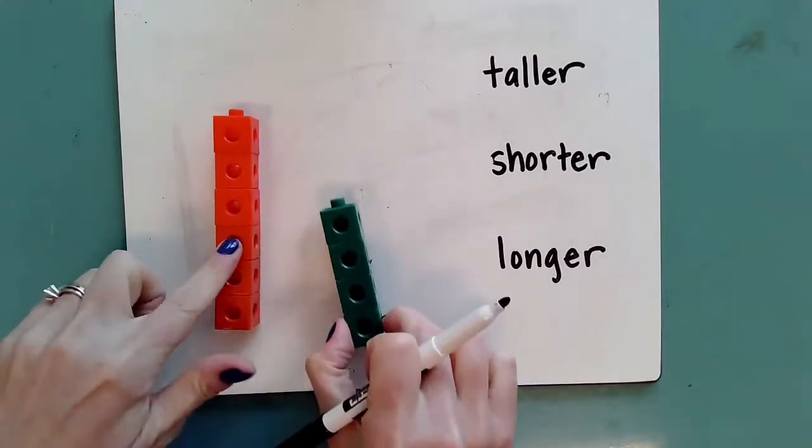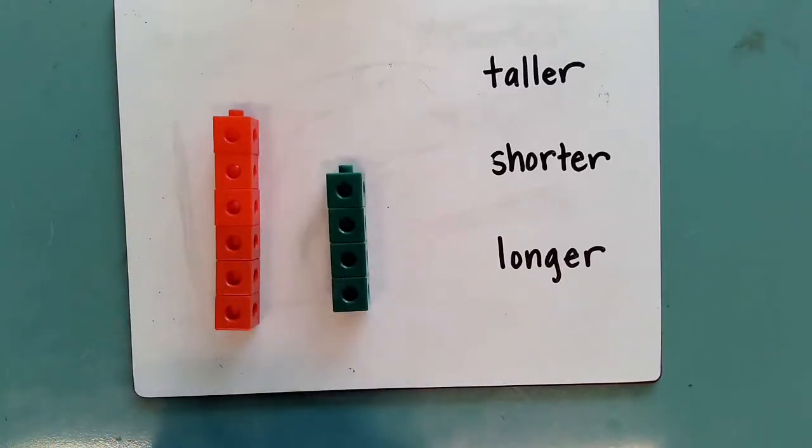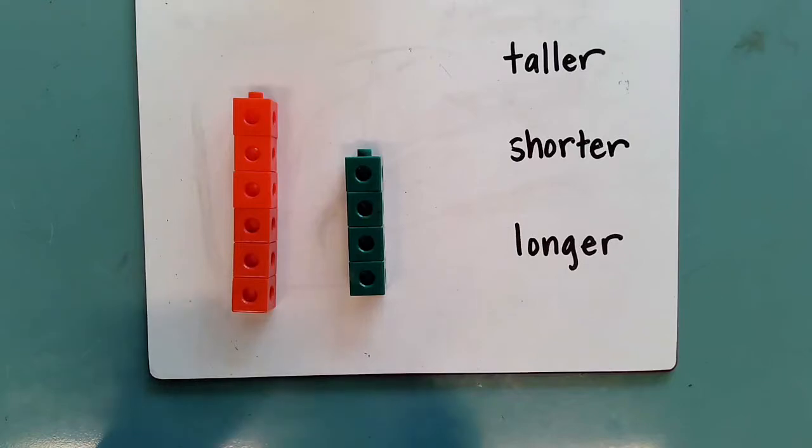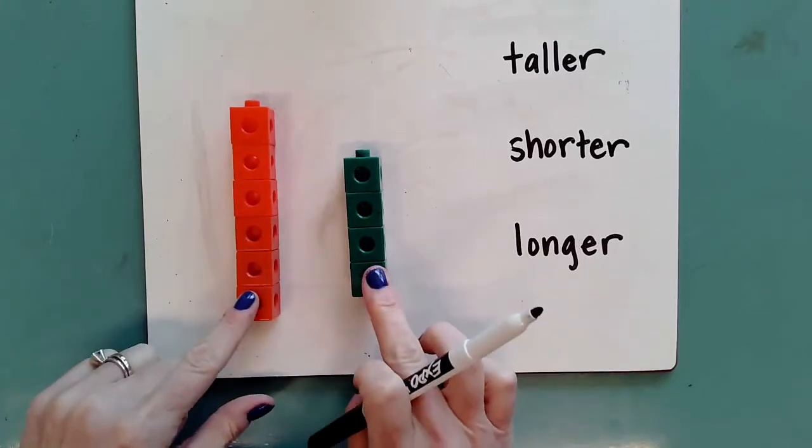I have two towers here. I have an orange tower of cubes and I have a green tower of cubes. And we're going to measure to determine which one is taller and which one is shorter.